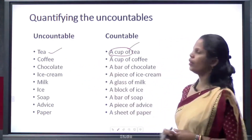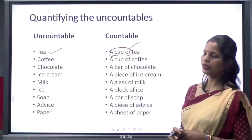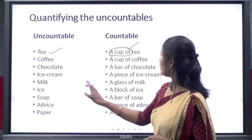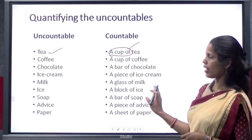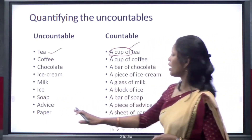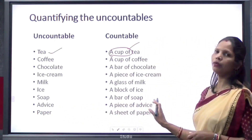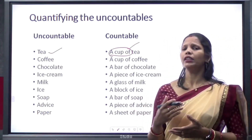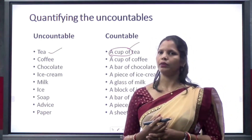Here are more examples: coffee becomes 'a cup of coffee'; chocolate becomes 'a bar of chocolate'; ice cream becomes 'a piece of ice cream'; milk becomes 'a glass of milk'; ice becomes 'a block of ice'; soap becomes 'a bar of soap'; advice becomes 'a piece of advice'; paper becomes 'a sheet of paper'. We can add different quantifying nouns to make an uncountable as countable.